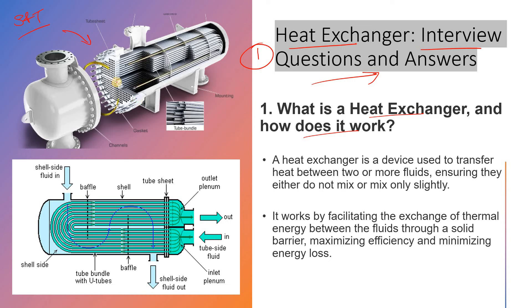That is why we use heat exchangers in chemical industries, refineries, fertilizer plants, and process plants. It works by facilitating the exchange of thermal energy — meaning heat — between fluids through a solid barrier, which is the tubes. This maximizes efficiency and minimizes energy loss.